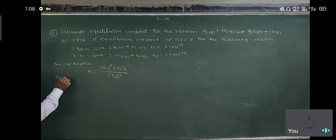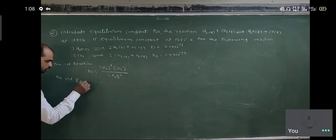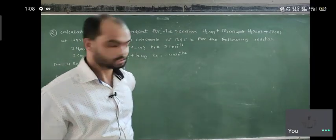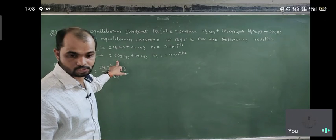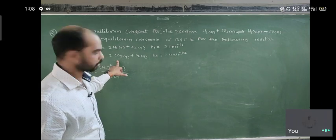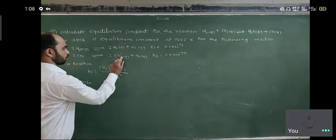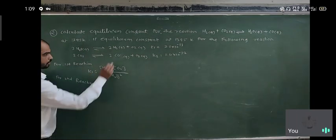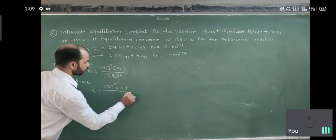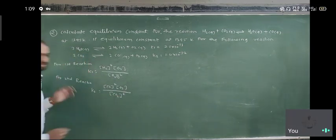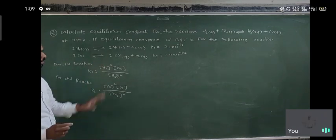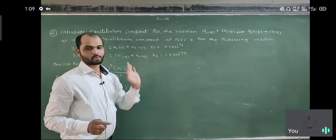For the second reaction, K2 is equal to concentration of CO squared times concentration of O₂ upon concentration of CO₂ squared. We already have the equilibrium constant values — K1 is 2.1 times 10 to the minus 13, and K2 is 1.4 times 10 to the minus 12.